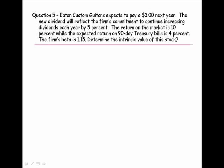Question number 5. Eaton Custom Guitars expects to pay a $3 dividend next year. The new dividend will reflect the firm's commitment to continue increasing dividends each year by 5%.